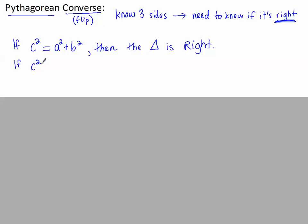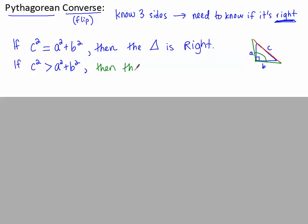Now if c² doesn't equal a² + b², the triangle will not be right. But we can do better than that and be more specific. If c² is greater than a² + b², imagine what that does to the angle that was a right angle. If I have c and make it longer, those two sides a and b still connect, but the angle has to reach out — making it larger than a right angle. So the triangle is obtuse.